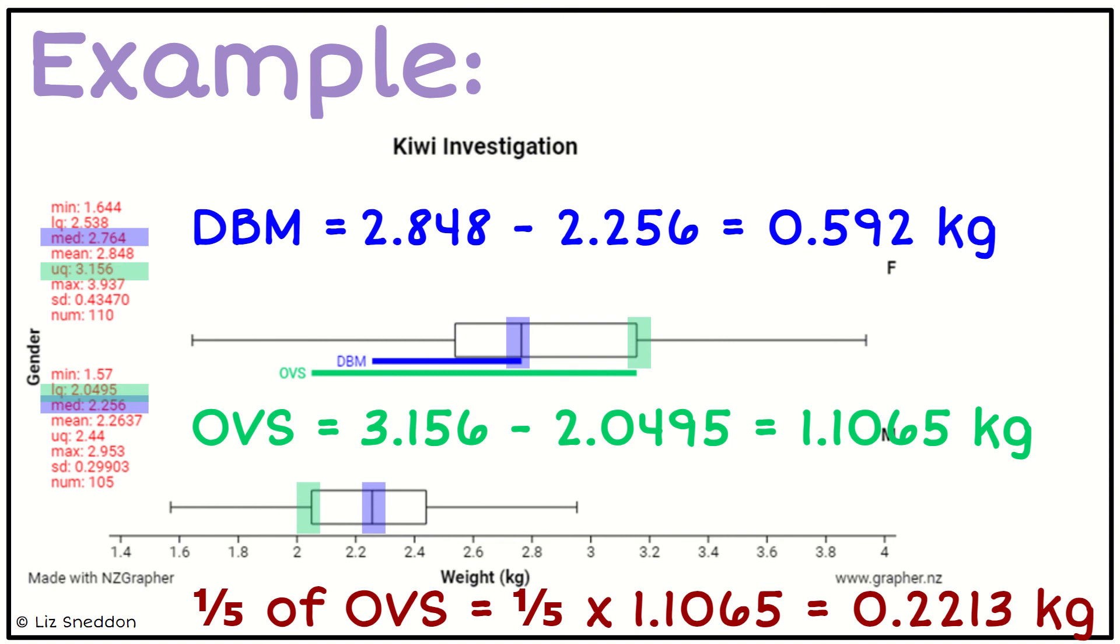To decide if I have enough evidence, I'm going to take that DBM and say is the DBM bigger or more than one-fifth of the OVS. We can see in this case, yes, the value of 0.592 is more than one-fifth, which is 0.2213. I have enough evidence to be able to say that one group tends to be bigger than the other.